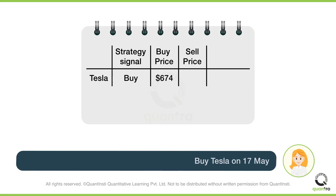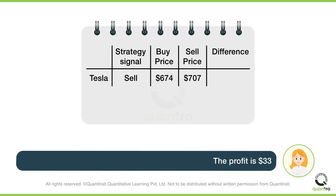For example, the strategy gave a buy signal for Tesla on 17 May at the close. Thus, you will note down the buy price as $674. Then the strategy gave the sell signal on the 26th of May. You will note down the sell price as $707. If you take the difference between them, you would get the profit or loss, which is $33.